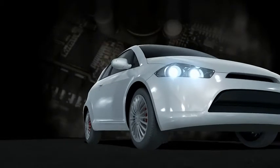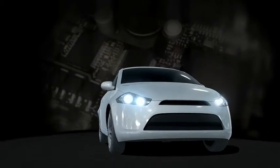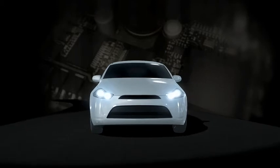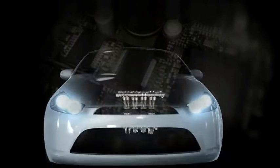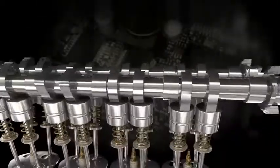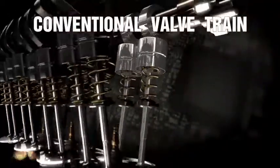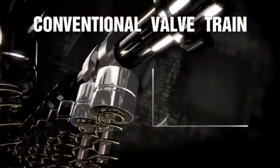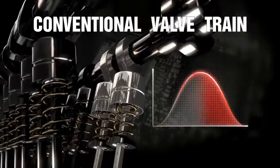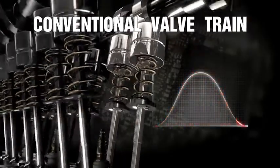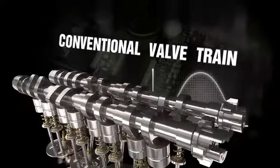In conventional internal combustion engines, cylinder air charge through the intake valve is controlled by the rotation of a camshaft through a simple throttle. The main disadvantages of this system are a waste of energy and a slow adjustment to the continuously changing driving conditions.